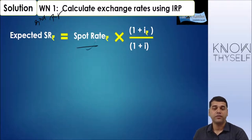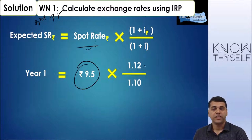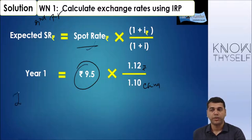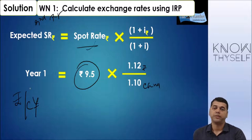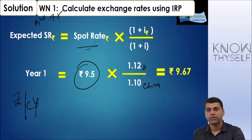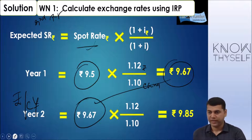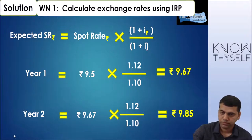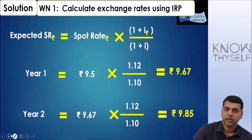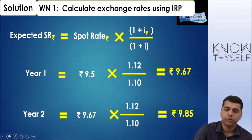Working Note 1: Calculation of exchange rates using IRP. This is required for the second question, not the first. The spot rate is 9.5 (Rupee per Chinese Yuan). Using India's inflation versus China's inflation, we get 9.67 at the end of year one and 9.85 at the end of year two, taking 9.67 as the spot rate for the second year calculation.